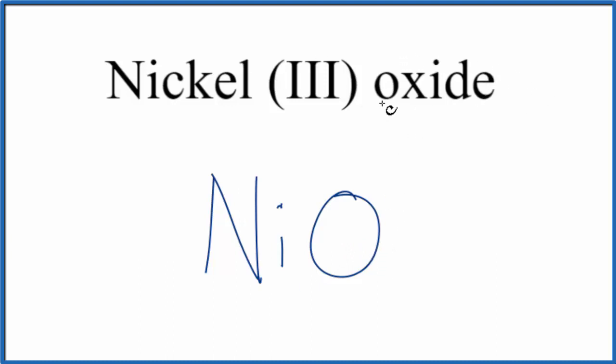Nickel oxide, nickel(III) oxide, that's a neutral compound. There's no plus or minus. It's not an ion. It doesn't say ion after. Because of that, all the charges will add up to zero.